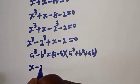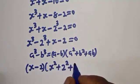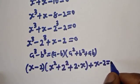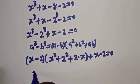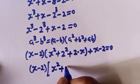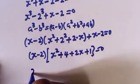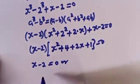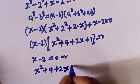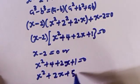Applying this rule: (s minus 2) bracket (s squared plus 2 squared plus 2 multiplied by s) plus (s minus 2) is equal to 0. Then s minus 2 is common, giving us (s minus 2) bracket (s squared plus 4 plus 2s plus 1) is equal to 0, which simplifies to (s minus 2)(s squared plus 2s plus 5) is equal to 0.